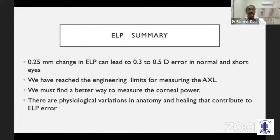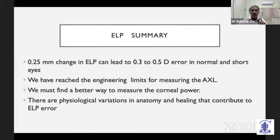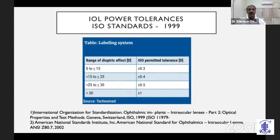In summary, a 0.25 millimeter change in ELP can lead to a 0.3 to 0.5 diopter error in normal and short eyes. We have reached the existing limits of measuring axial length and we must find a better way to measure corneal power. There are physiological variations in anatomy and in healing that contribute to ELP error, and some of this cannot be addressed by better quality instruments.